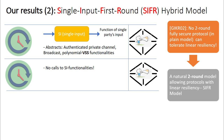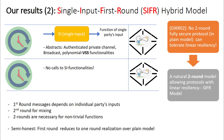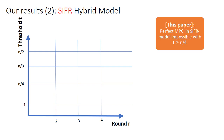In the second round, there is no call to single-input functions allowed. We observe that in a CIFAR protocol, the first-round messages depend on individual parties' inputs, and the second round is kept for mixing the inputs. Therefore, two rounds are indeed necessary for computing non-trivial functions securely. When we downgrade security of a CIFAR protocol in the semi-honest setting, the first round simply reduces to a round over the plain model. In the CIFAR model, we prove a very interesting impossibility result: perfect MPC in the CIFAR model is impossible with more than one-fourth corruption. This is complemented with a perfect CIFAR protocol with less than one-fourth corruption.